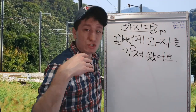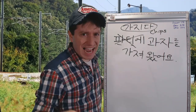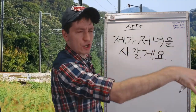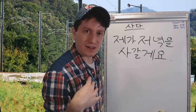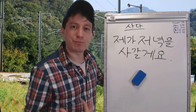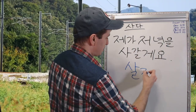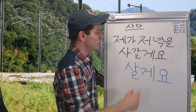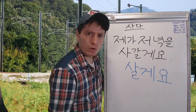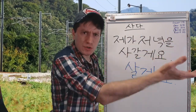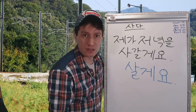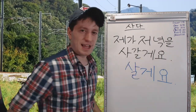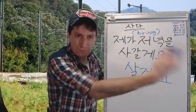So 가다 and 오다 show the direction of an action. 사다 means to buy. 사가다 means to buy and then go somewhere; 사오다 means to buy and then bring here. 살게요 means 'I will buy you dinner,' but 사갈게요 means I will buy it and then go — meaning I'll bring it to you where you are. So 제가 저녁을 사갈게요 means 'I'll buy dinner for you and bring it to you.' Not only am I buying you dinner, I'm also bringing it to you.